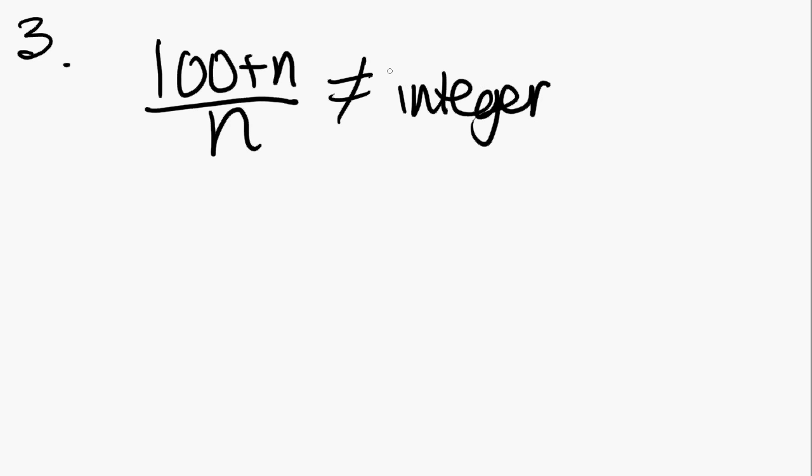Number 3. For which of the following values of n is 100 plus n over n not an integer? Quick review. What's an integer? Well, an integer is any number that is not a fraction or a decimal. So any whole number, at least that's how the GMAT sees it.